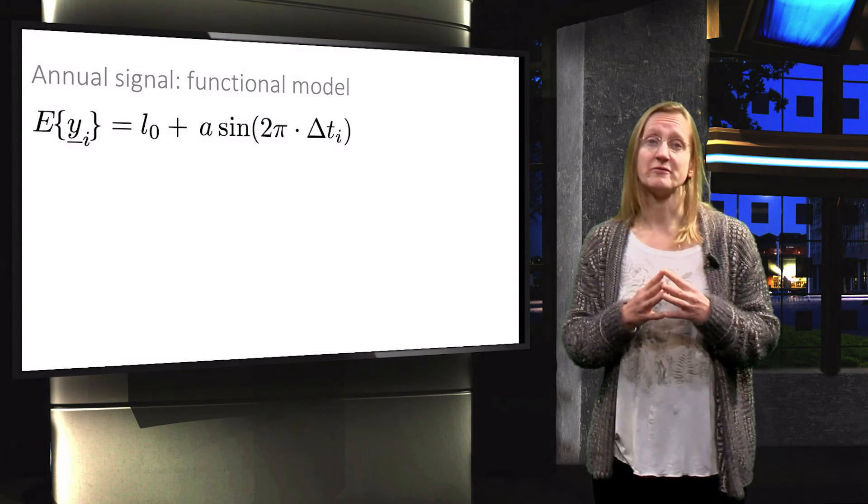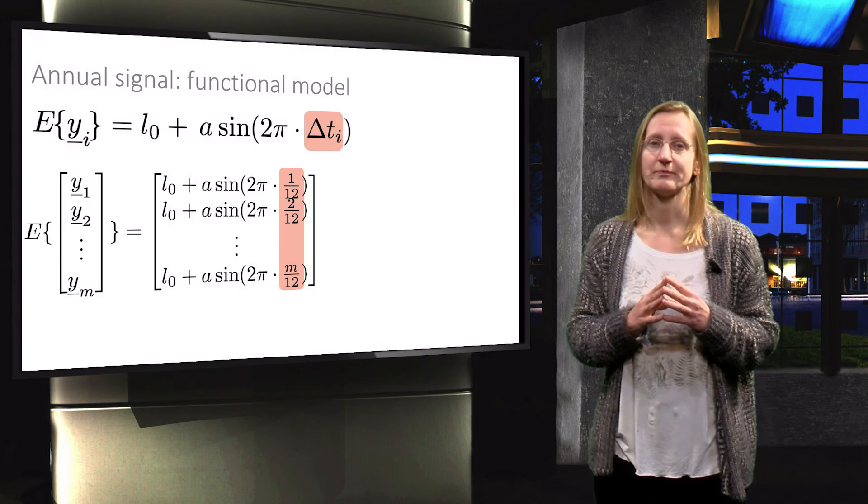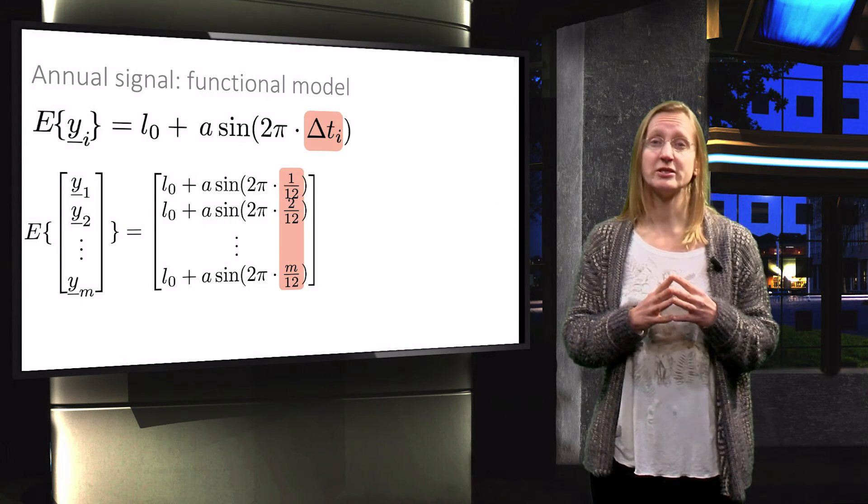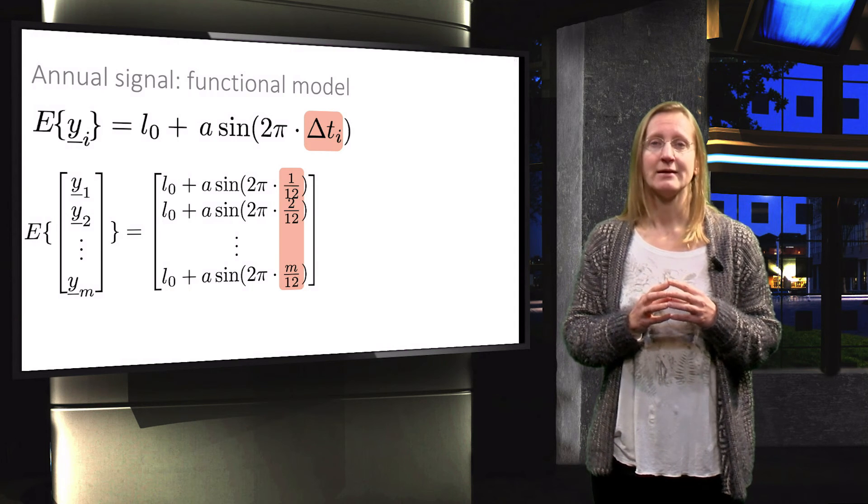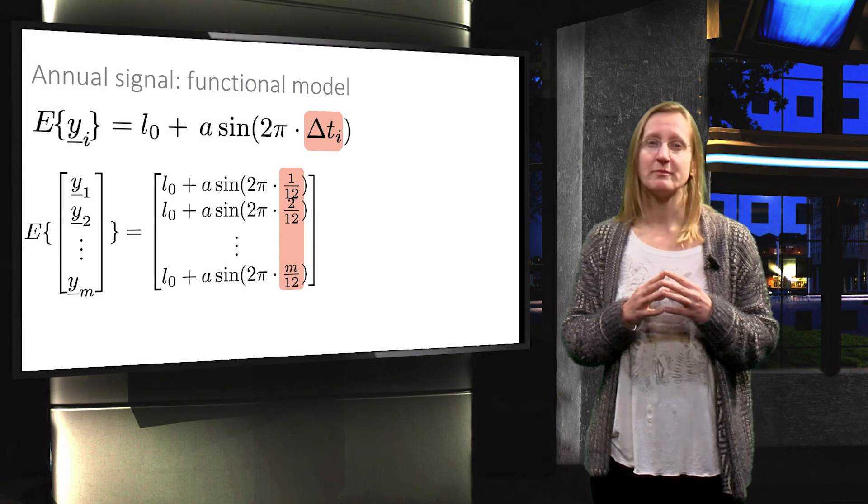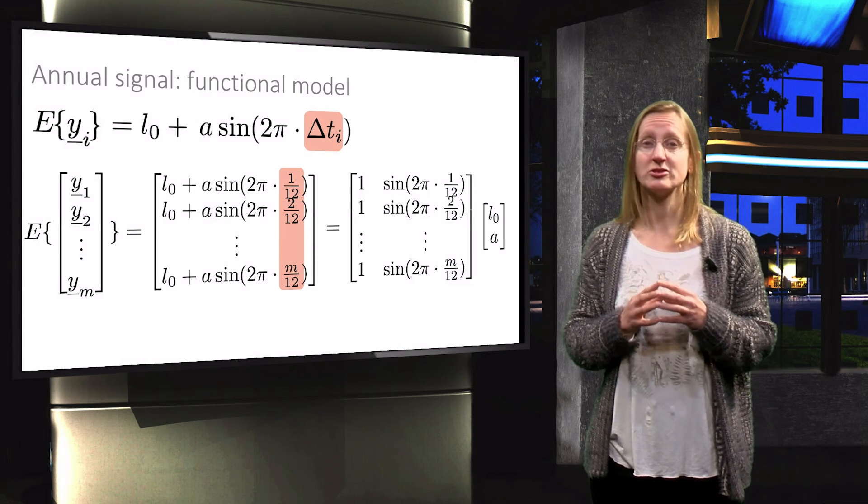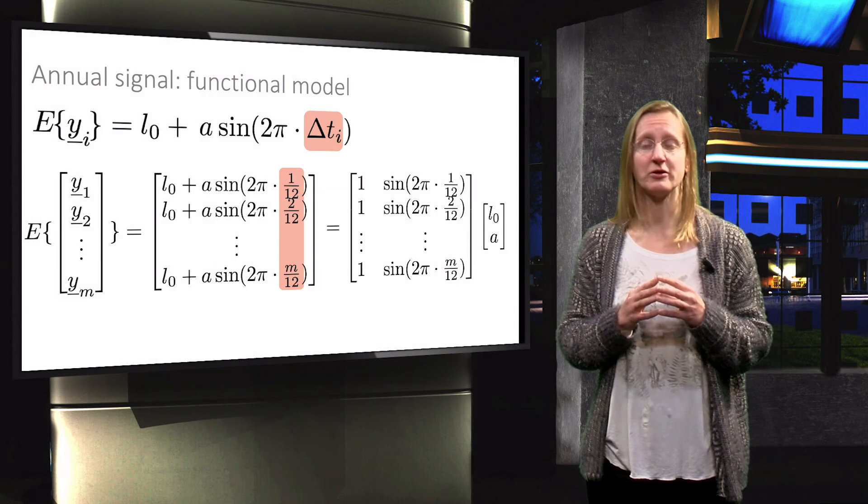Based on which the functional model follows as this system of equations, where each row is equal to the observation equation shown above with corresponding time interval. This can also be written as a matrix vector product as shown on the right hand side, such that we again recognize the different constituents of the functional model.